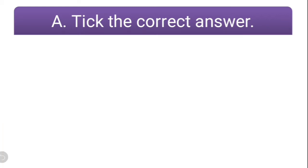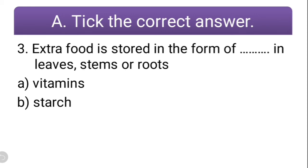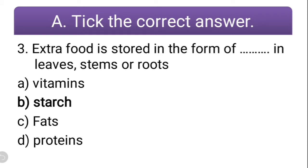Question number three: extra food is stored in the form of dash in leaves, stem, and roots. In what form is it stored chemically? Is it vitamin, starch, fats, or proteins? The correct answer is starch. So you have to tick mark option B.